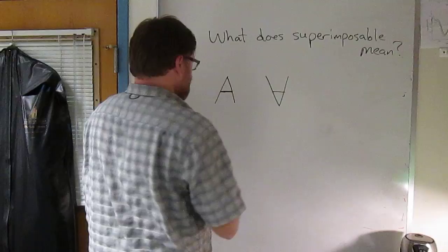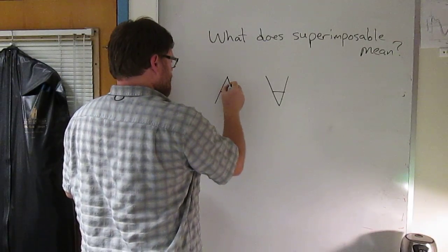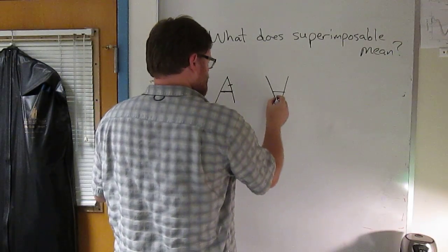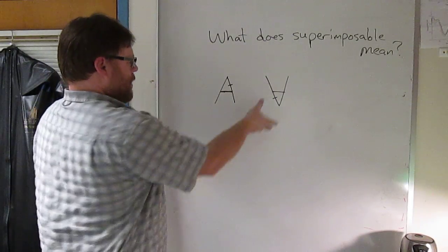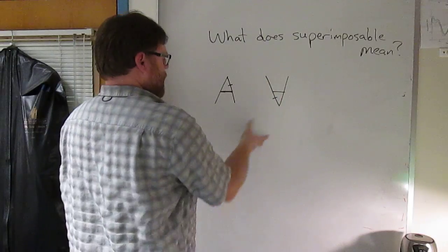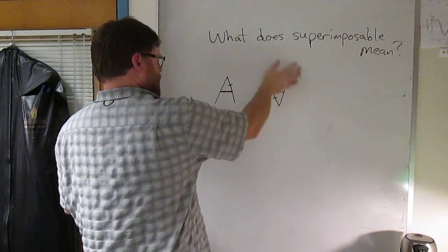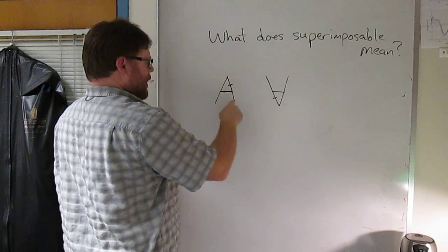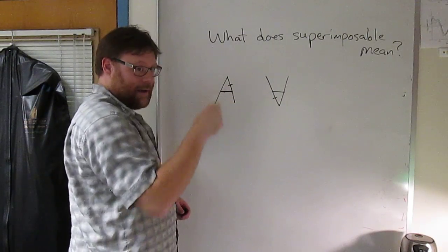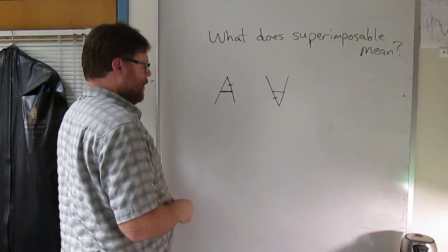Well, now what happens if I draw a little line like that and like that? Well, now I can just spin this way, right? Take the A and do this, give it a sort of counterclockwise spin and the A will line up and the little wedge, the little tick in the leg will line up.